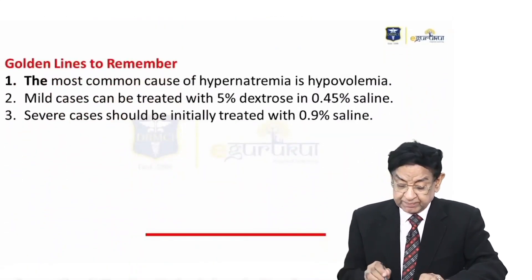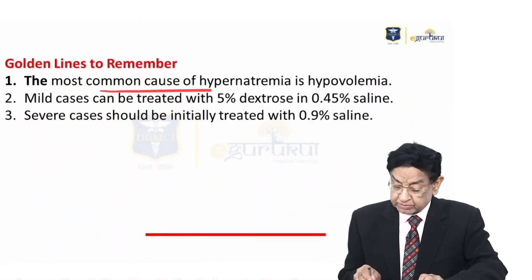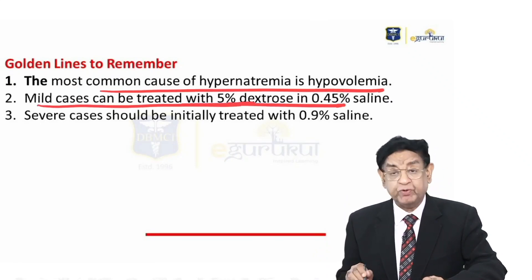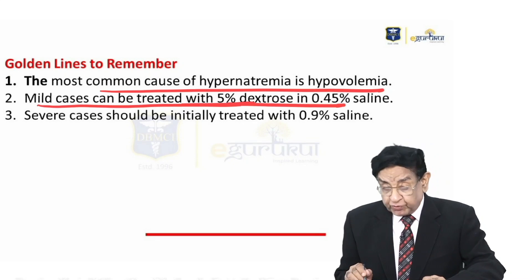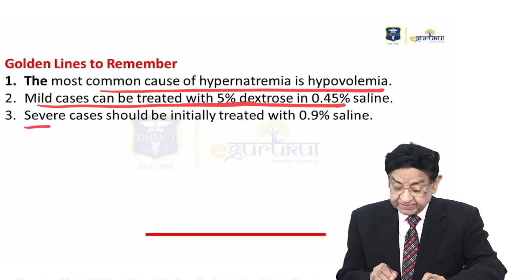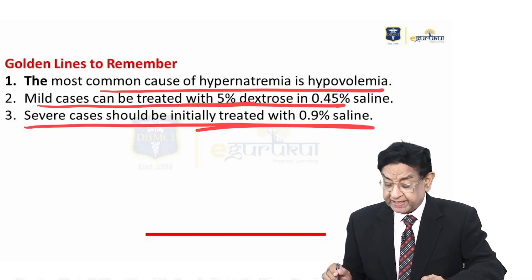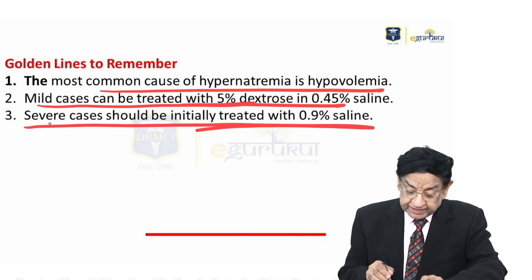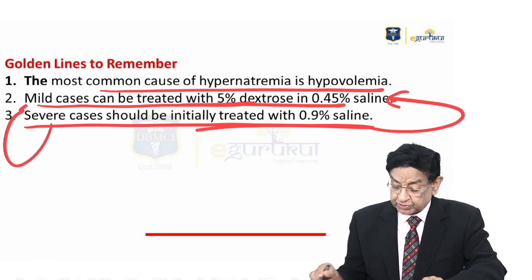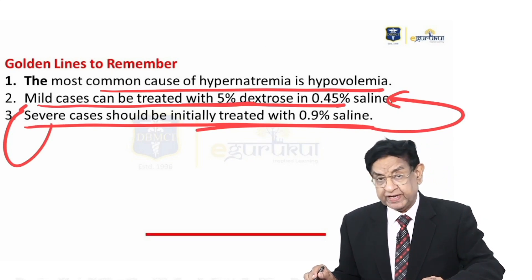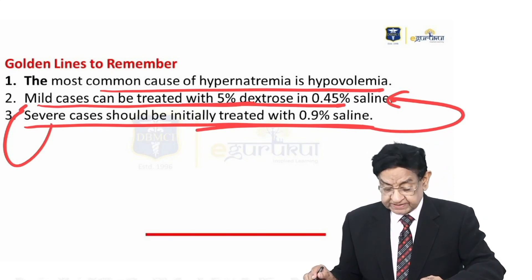The golden line to remember: the most common cause of hypernatremia is hypovolemia. Mild cases can be treated with 5% dextrose with 0.45% saline. Severe cases should be initially treated with 0.9% saline, and later switched over to 5% dextrose with 0.45% saline.